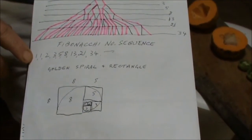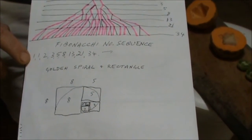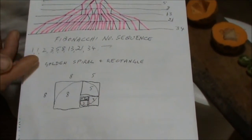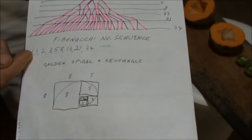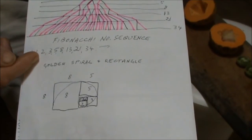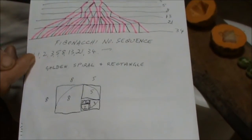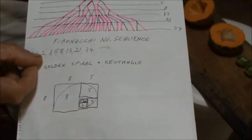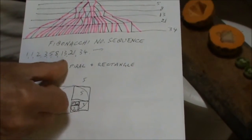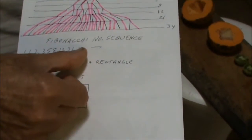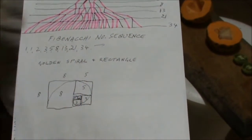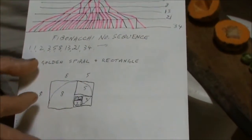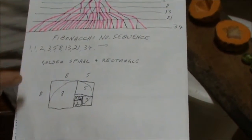The Fibonacci sequence starts at zero, then one. You add the previous two together: zero plus one is one, then one plus one is two, and you keep going like that, just adding the previous two numbers together.